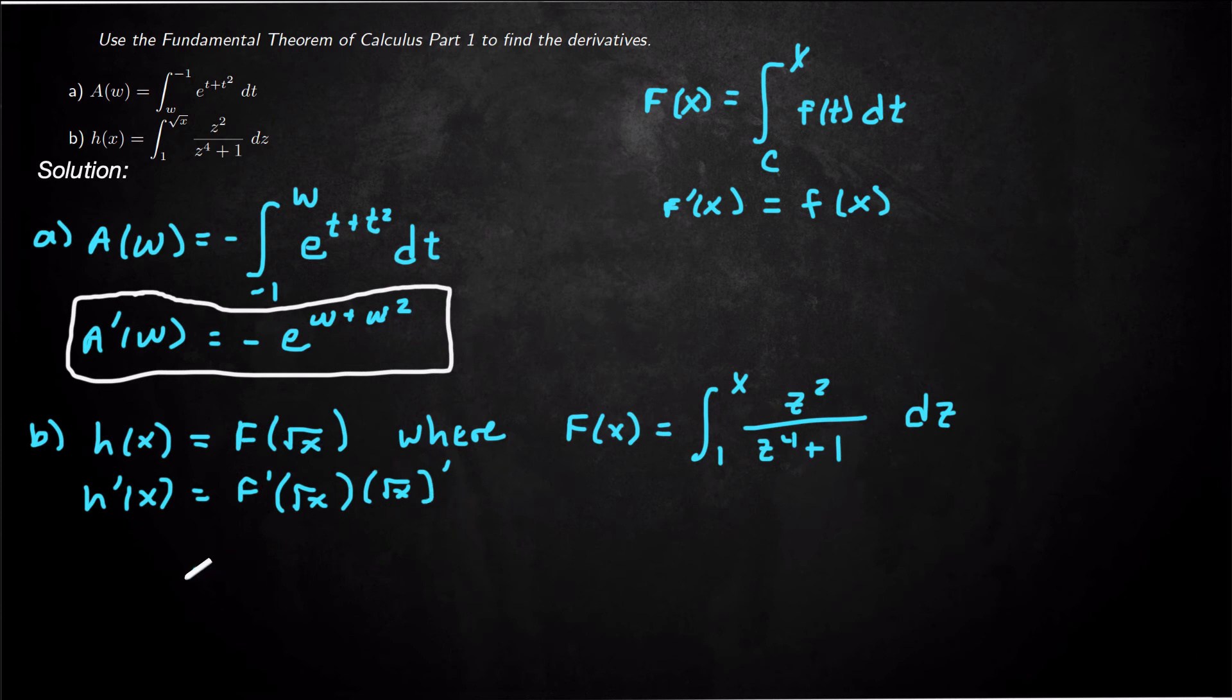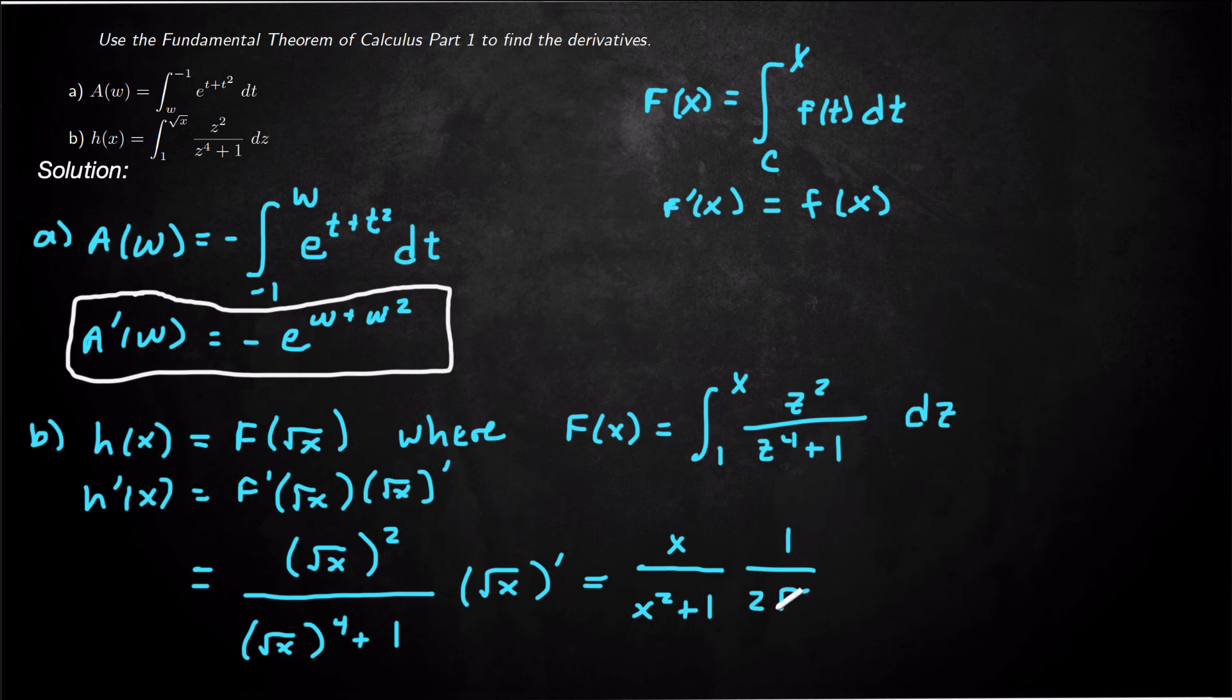So this is going to be square root of x squared over square root of x to the 4 plus 1, times the derivative of square root of x.